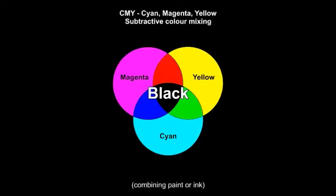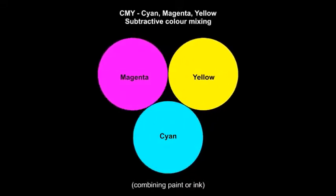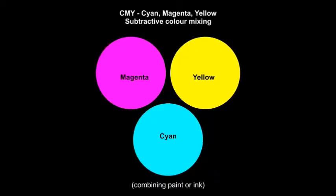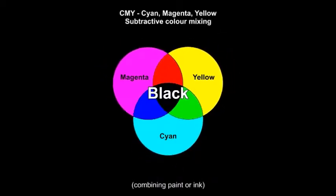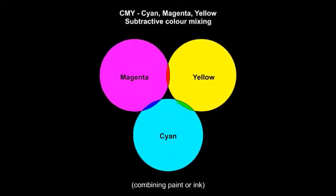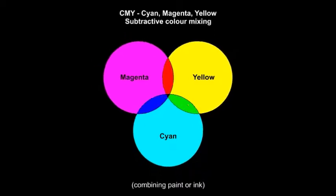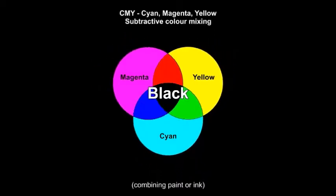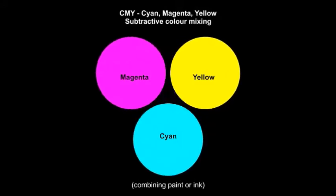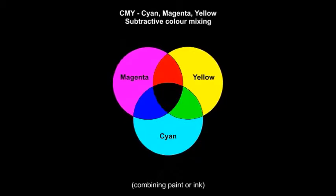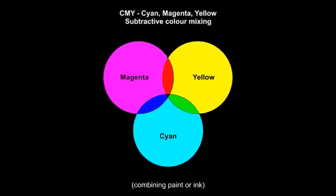Reflected colors with subtractive color mixing are also called CMY colors for the primary colors cyan, magenta, and yellow. A color printer works with CMY colors and also has black for additional contrast. The letter K is used for black. Therefore, printers work with CMYK colors.